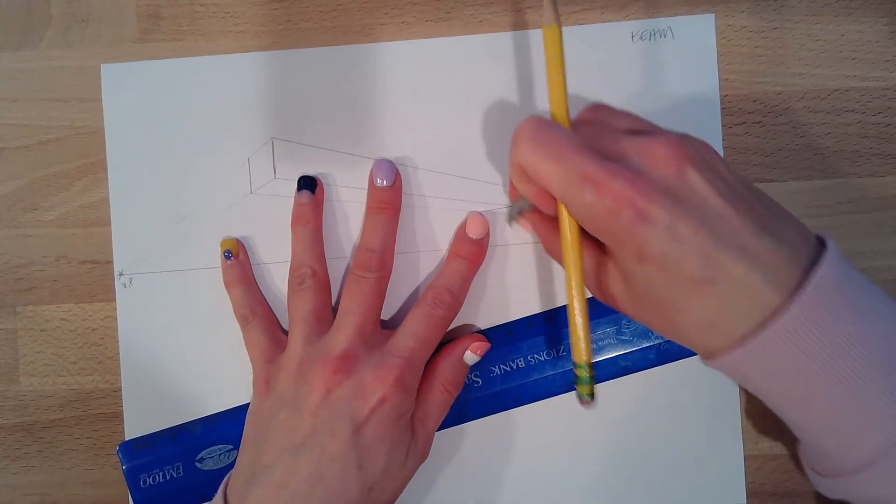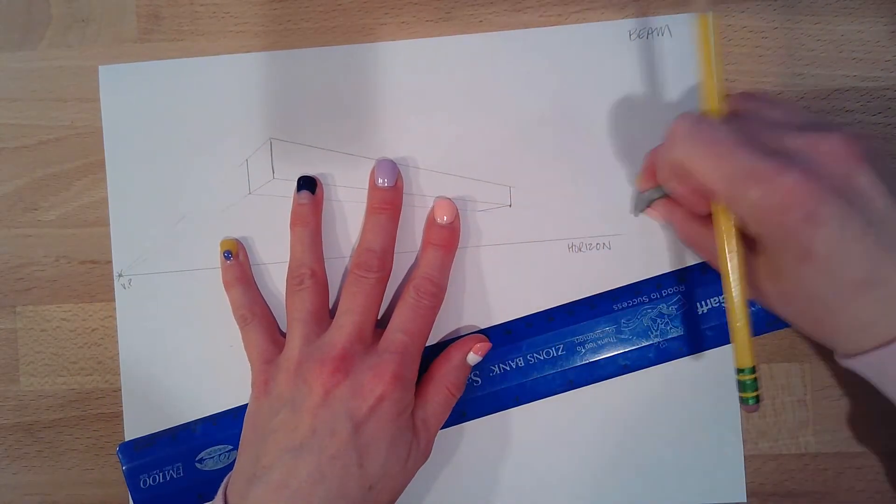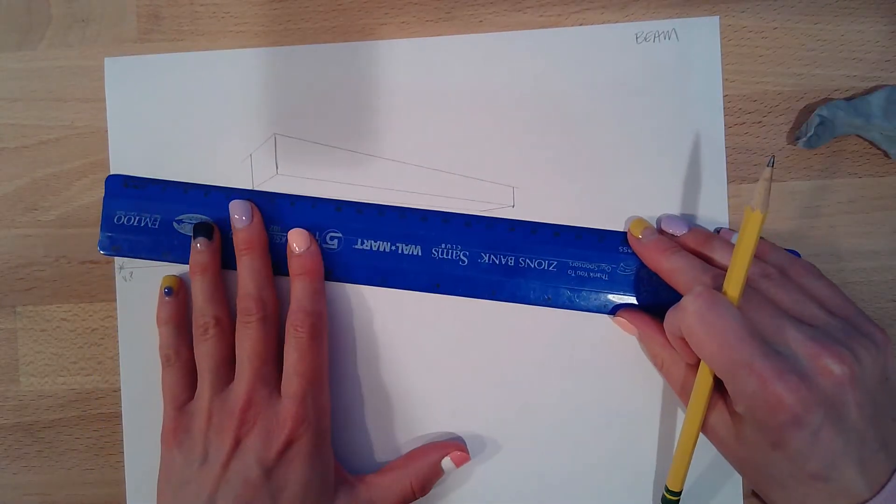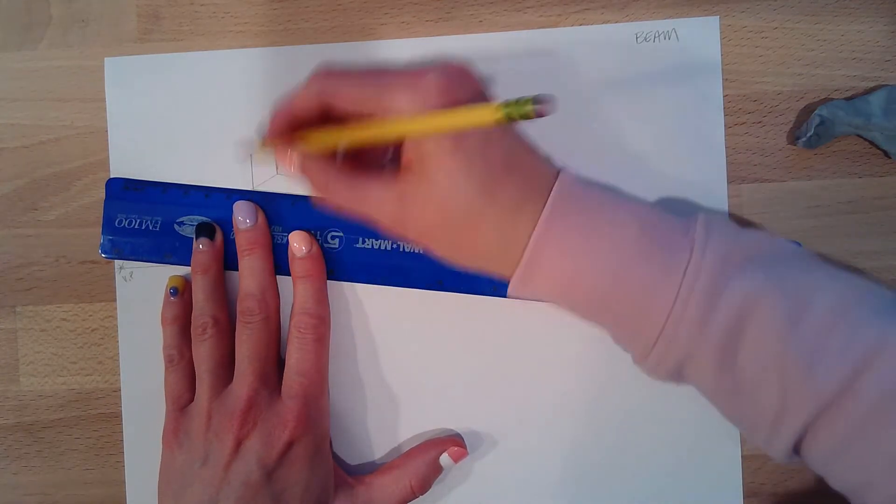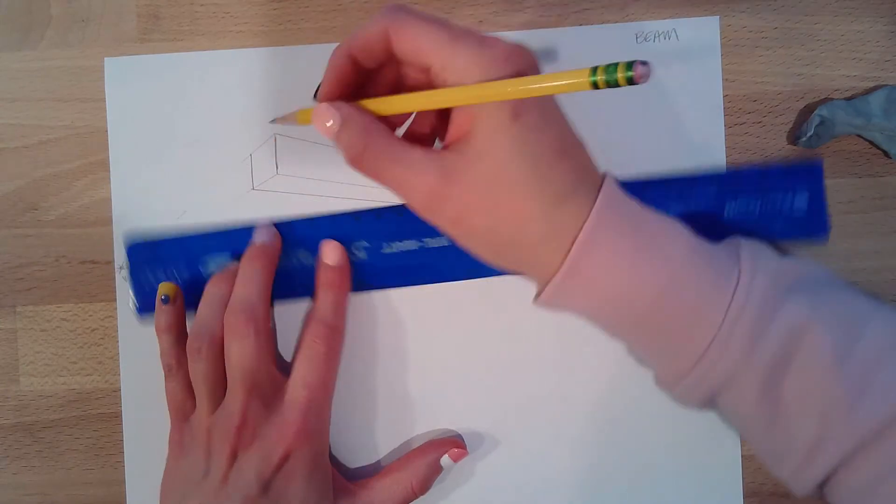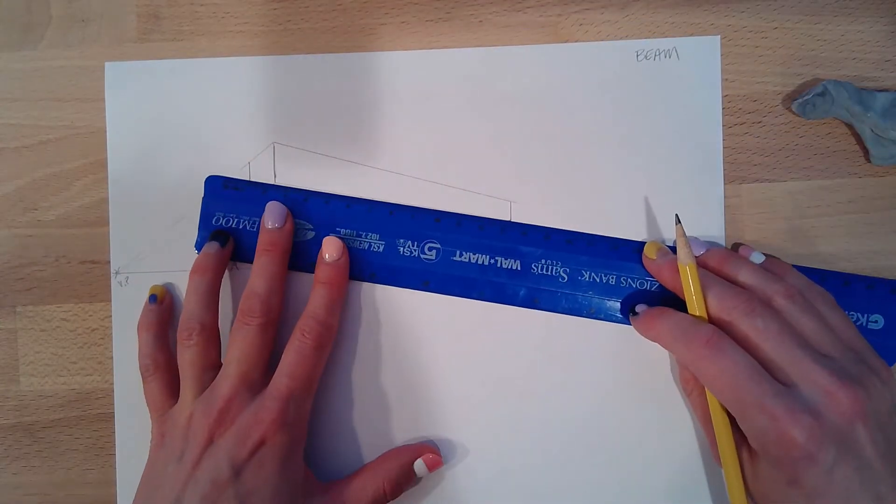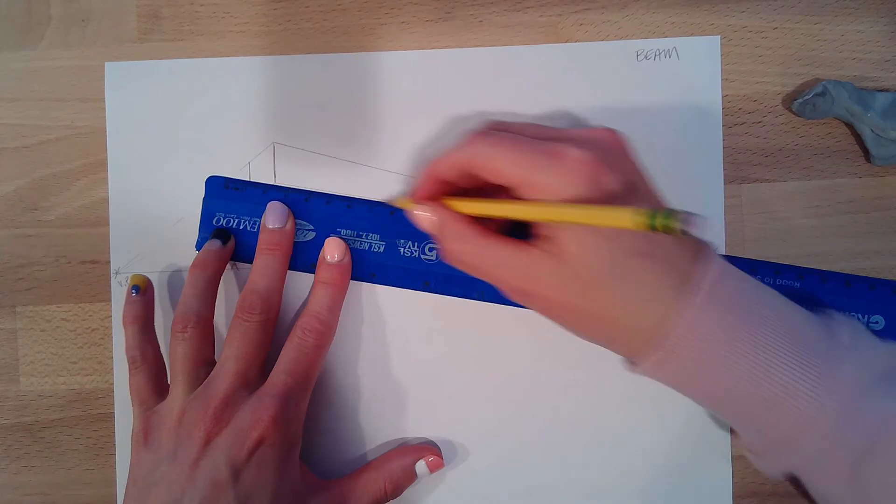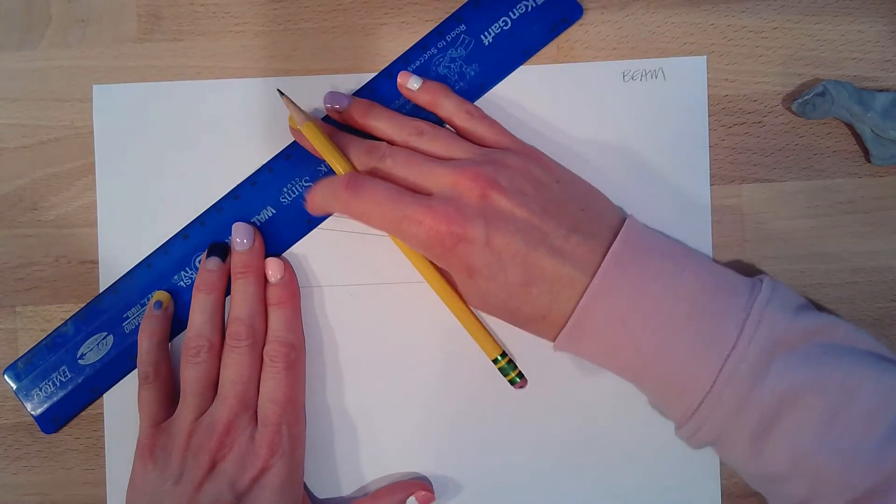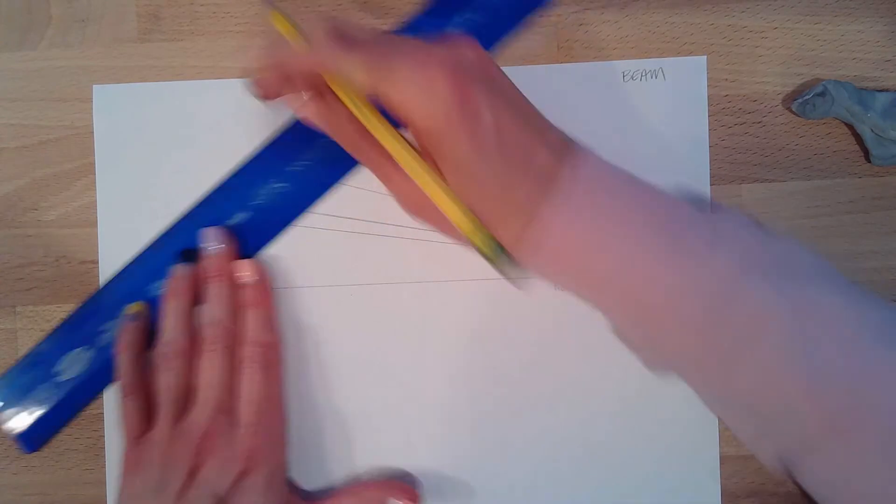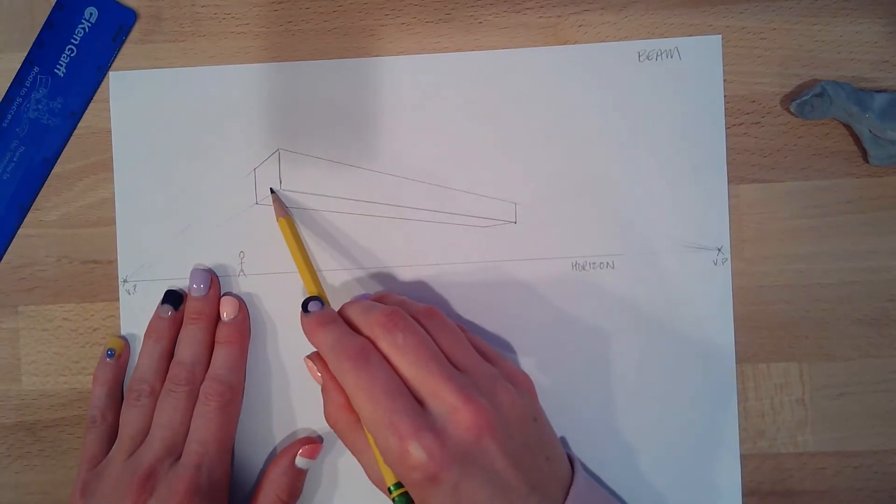Now sometimes people get a little bit confused. This is what I want you to think of. When you're playing with blocks at home, all your edges are parallel. I'll show you what I mean as soon as I darken these lines up. So if this is a block, I've got the front and the back.